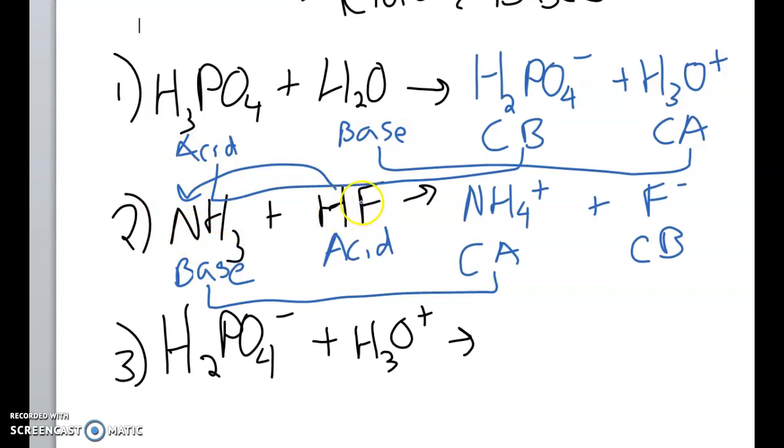You could also think of this acidic proton kind of as like a baton, like a track runner. Whoever has the baton is the one running. Because here the acid has the proton, or the baton, it's the acid. And since the baton moved on to this guy, now this guy has the baton, now it's the acid. So in the products it turns into an acid, and likewise the acid, because it lost its baton, turns into the base.